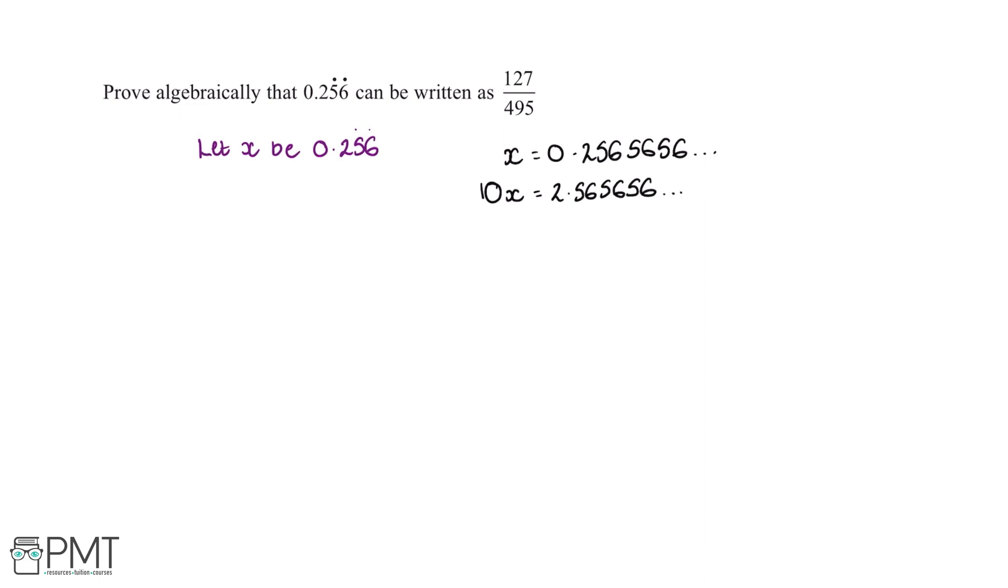And as we can see, after the decimal point of x we have 2, 5, and 6, whereas after the decimal point of 10x we have 5, 6 reoccurring.